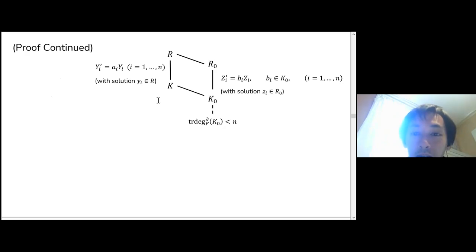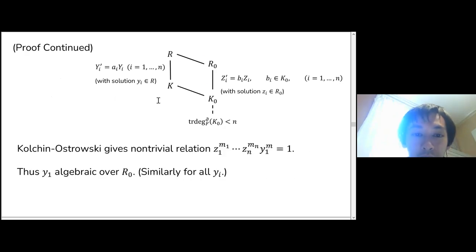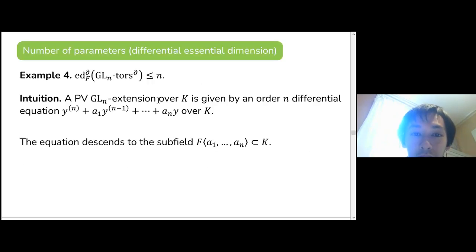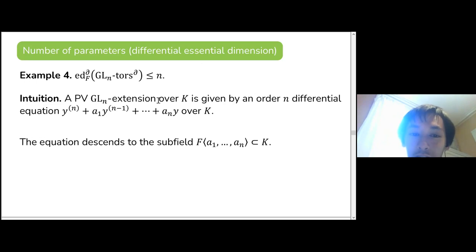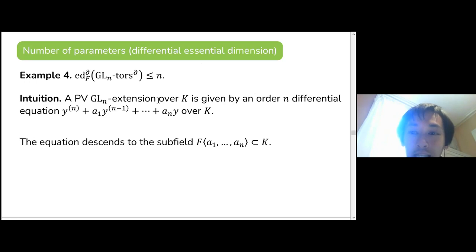There are also some extensions we don't understand as well, but we still get bounds. For example, GL_n extensions are given by differential equations of order n, so you need N parameters there.